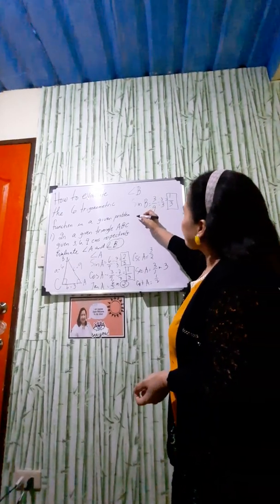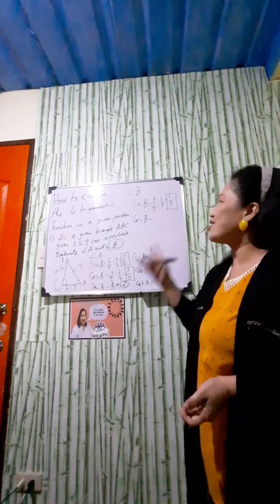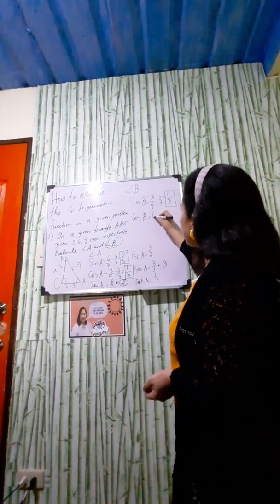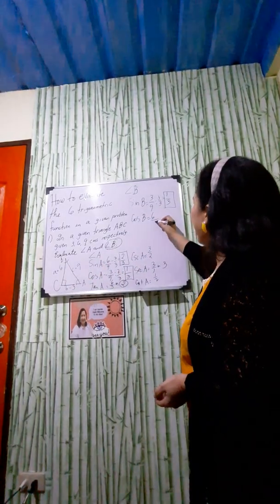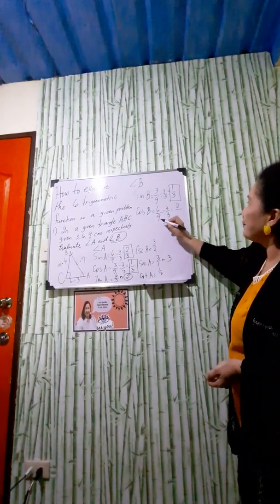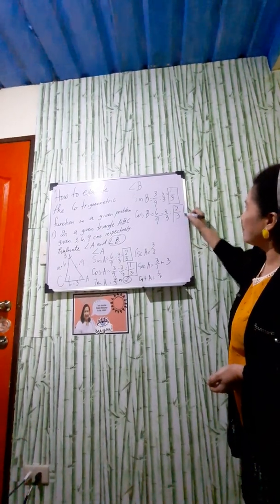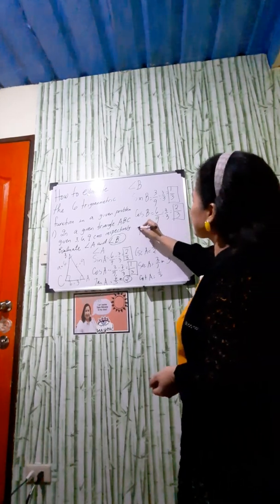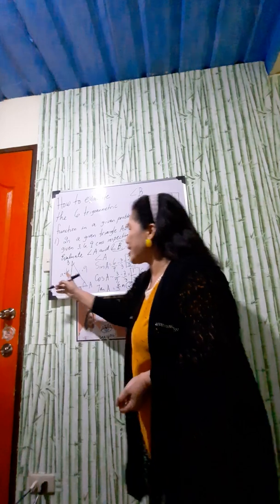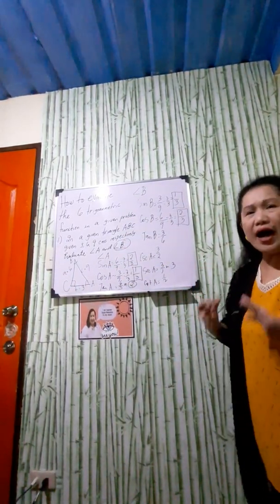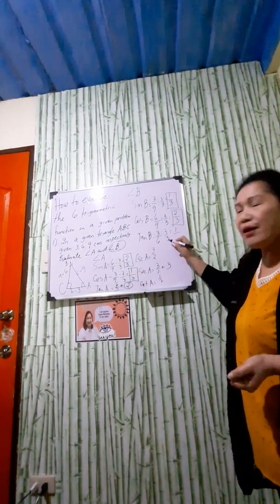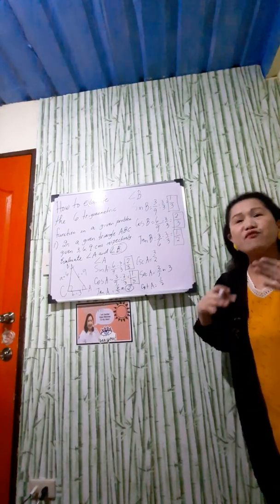For cosine B, using CAH — adjacent over hypotenuse — the adjacent side to angle B is six, and the hypotenuse is nine. So cosine B equals six over nine, which simplifies by dividing both by three to give two-thirds. For tangent B, using TOA — opposite over adjacent — that is three over six. Dividing both by three gives one over two, so tangent B equals one-half. Those are the primary functions of angle B.